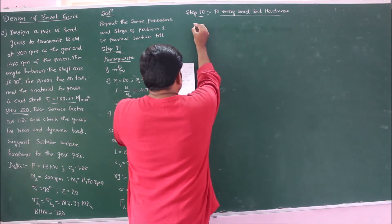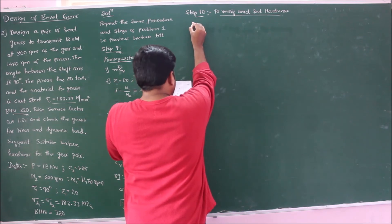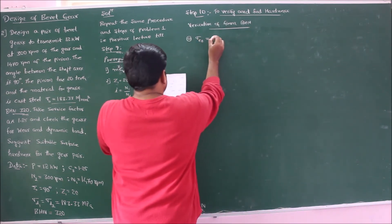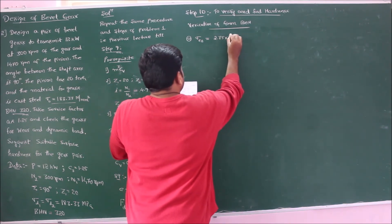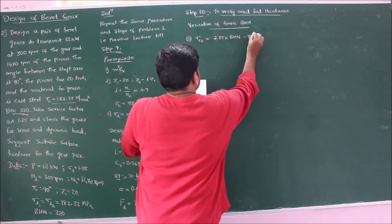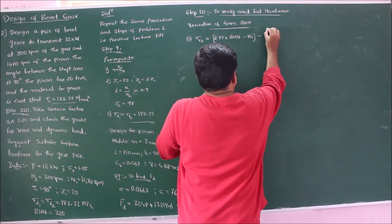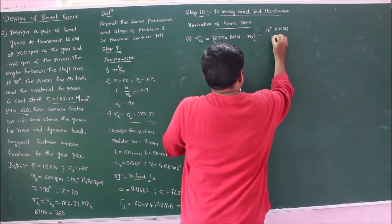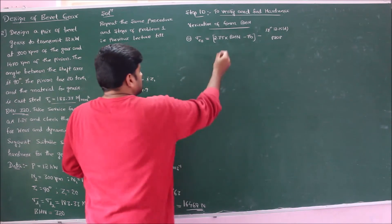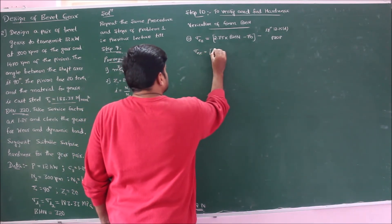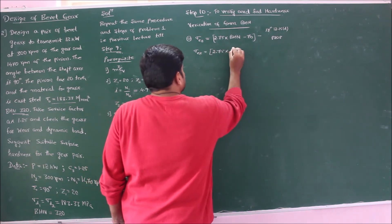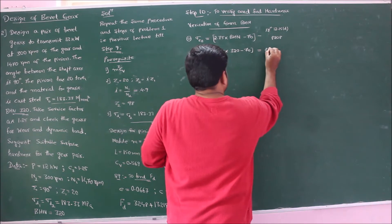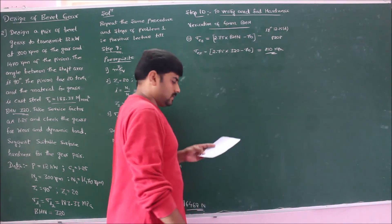Substituting the given BHN of 320: σ_endurance = 2.75 × 320 − 70 = 810 MPa.